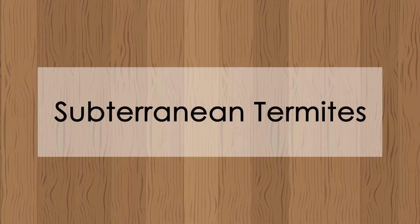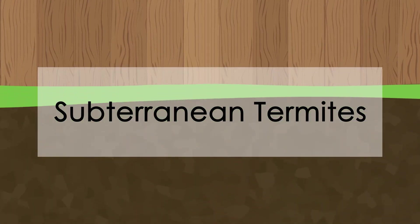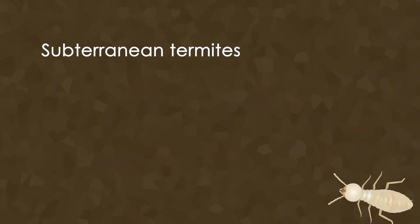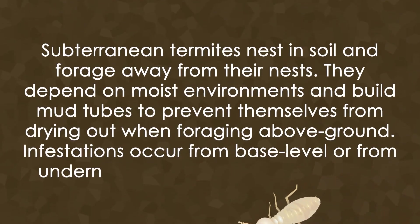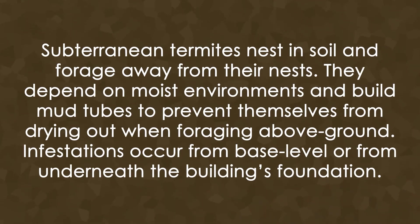Now let's look at subterranean termites. Subterranean termites nest in soil and forage away from their nest. They depend on moist environments and build mud tubes to prevent themselves from drying out when foraging above ground. Infestations occur from base level or from underneath the building's foundation.